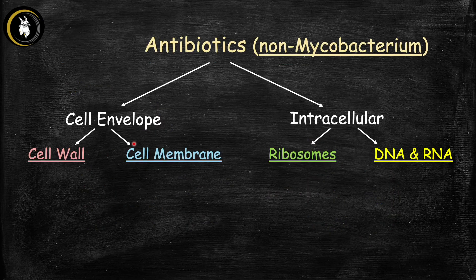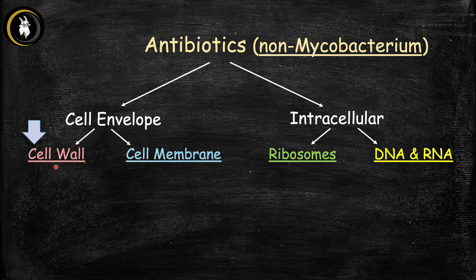Based on those targets, we can organize all our antibiotics into four main groups: antibiotics that destroy the bacterial cell wall, antibiotics that destroy the cell membrane, antibiotics that inhibit bacterial ribosomes, and antibiotics that inhibit bacterial DNA and RNA synthesis. In the rest of this video, we'll go through each of these four categories, starting with class one — the cell wall inhibitors.